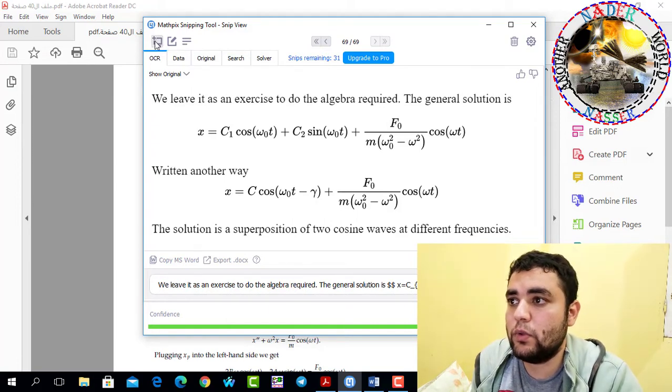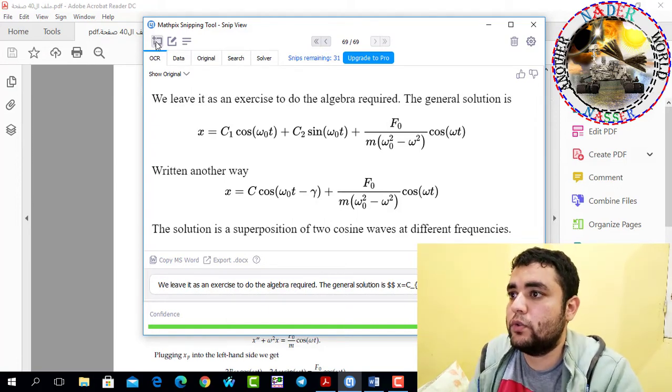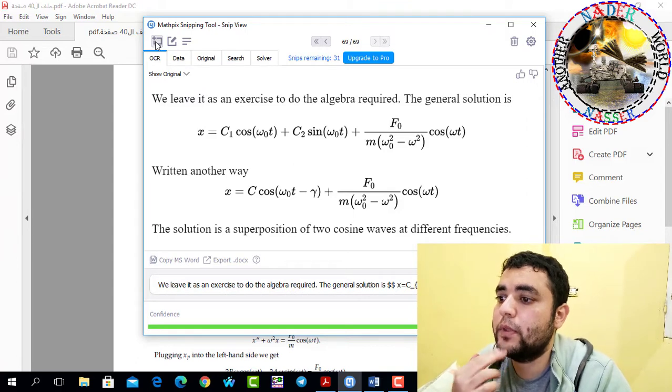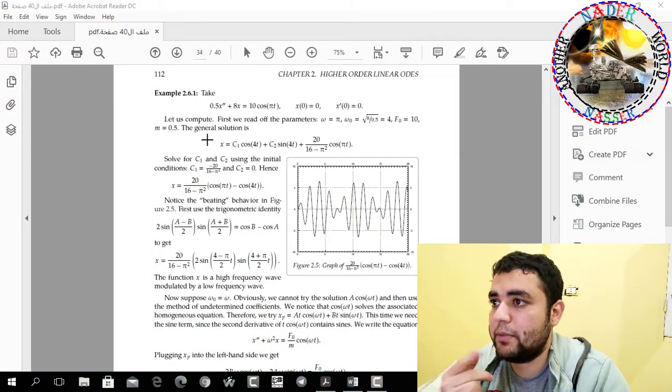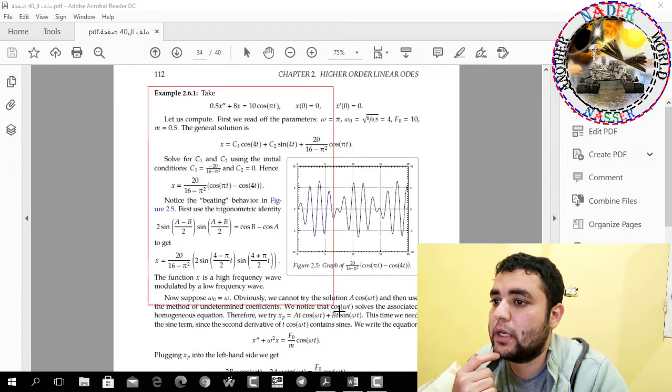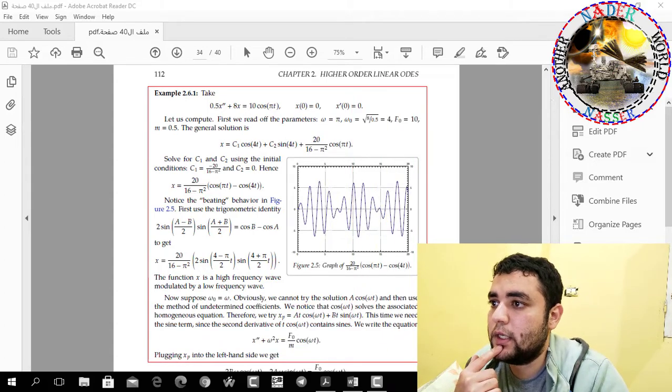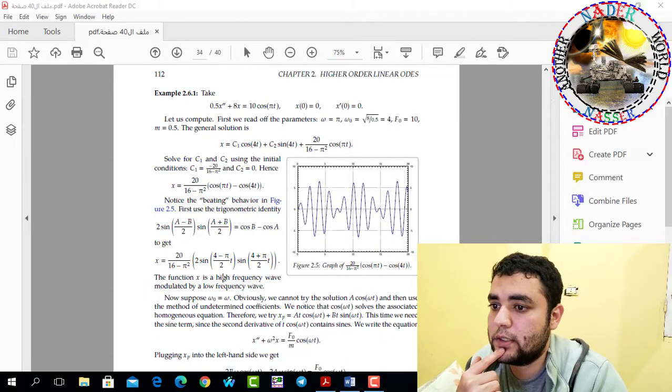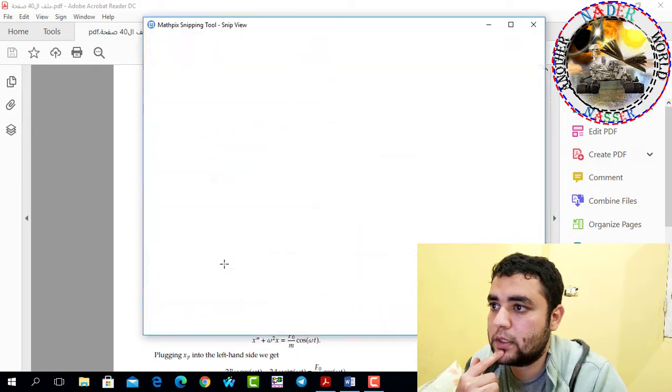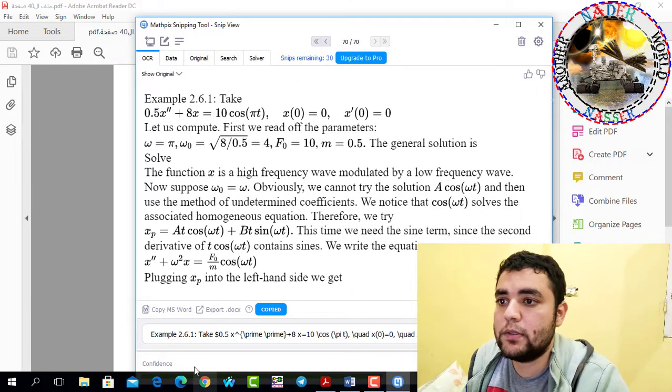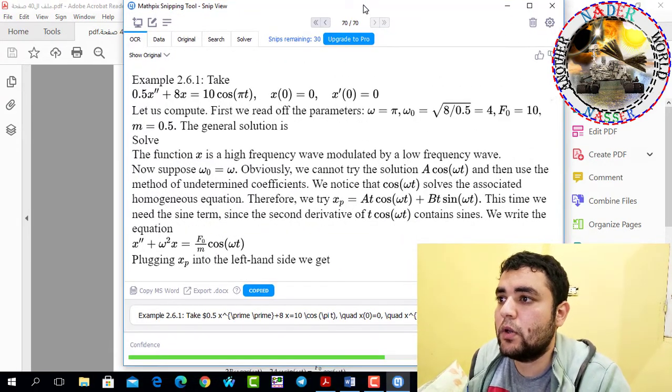We are going to the icon, this snip icon. Click on it, select the text needed, then wait.